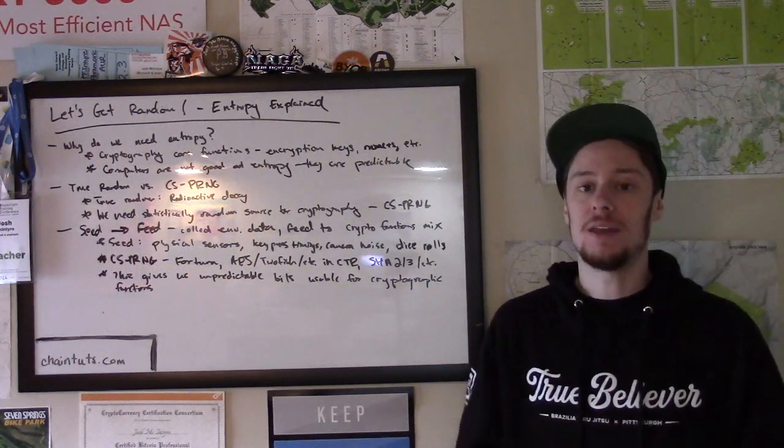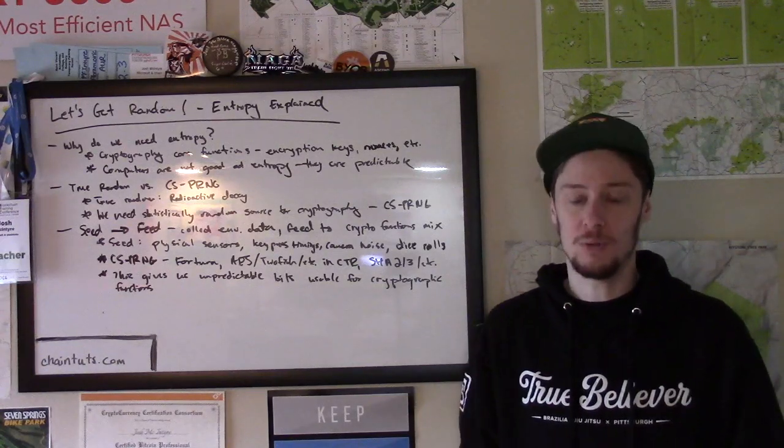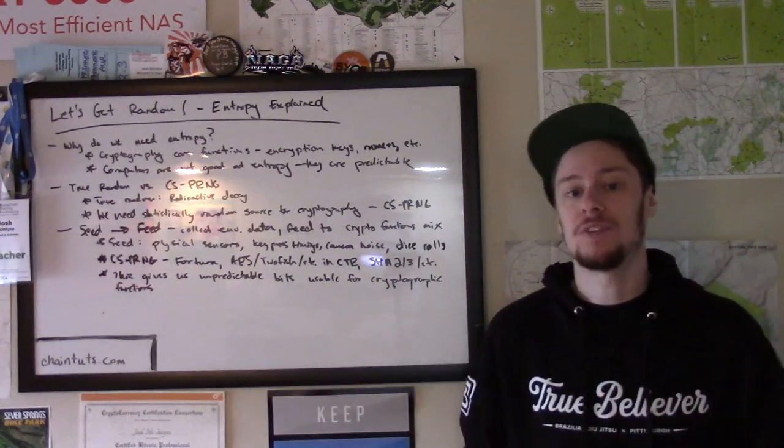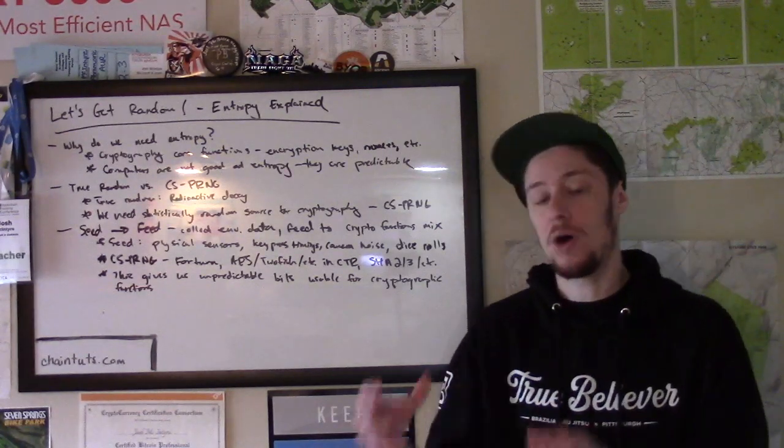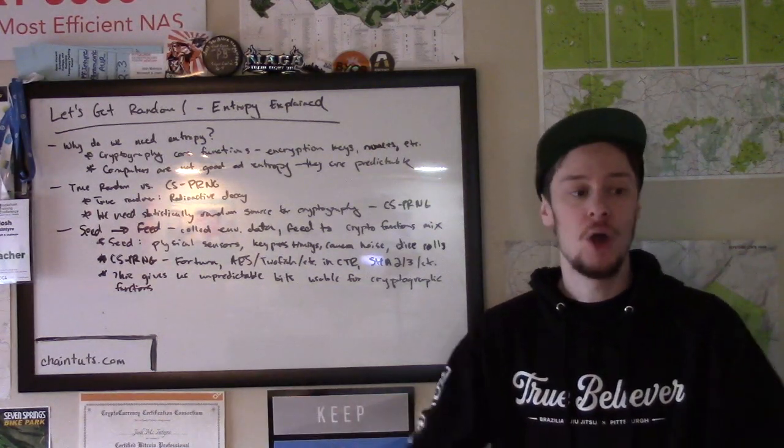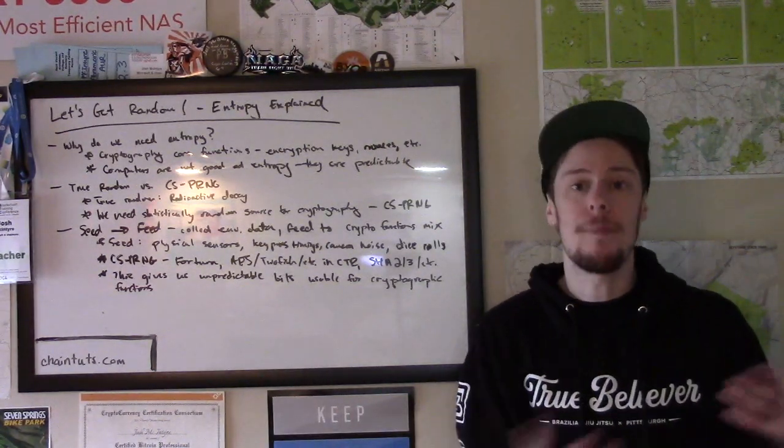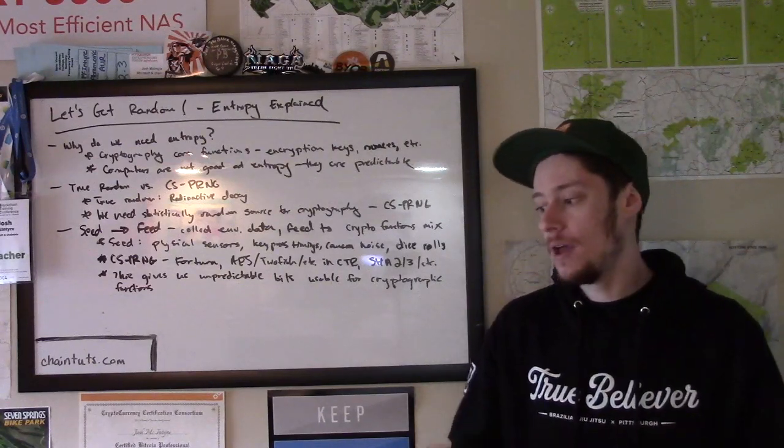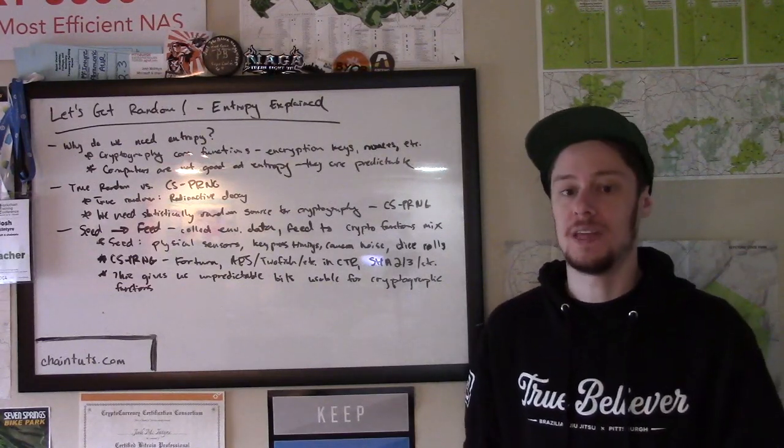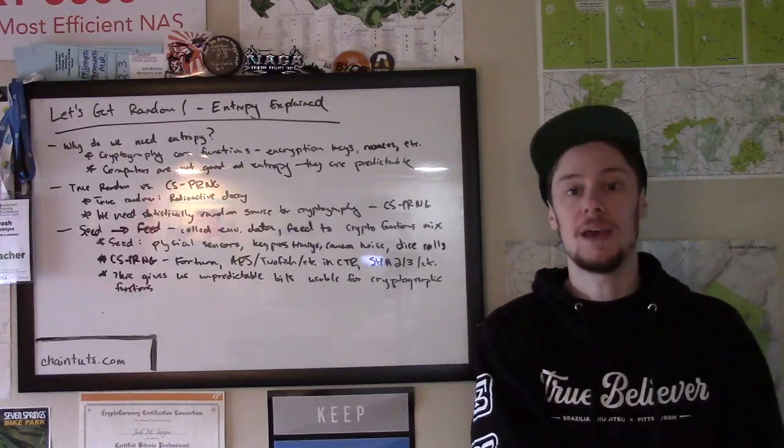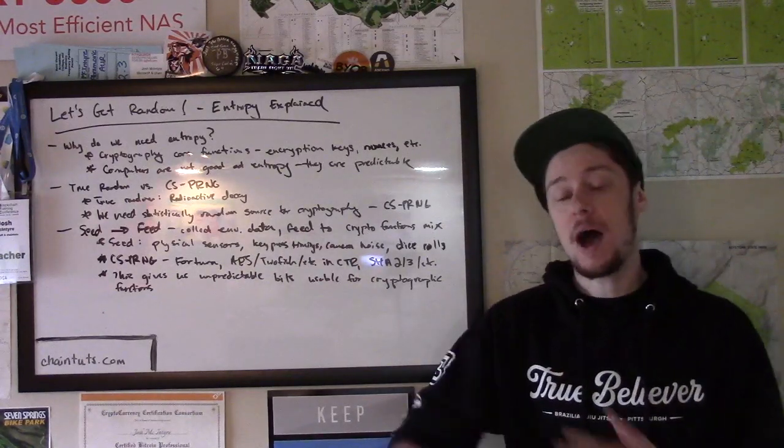If you have a SHA-2 hash of something, there's no way to tell looking at the output bits what the input was. You can't go backwards, and there's no predictability in the sense that if you change one or two bits of the input, the seed data, the output will look totally different.